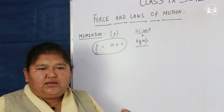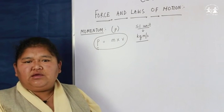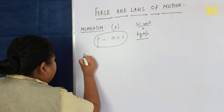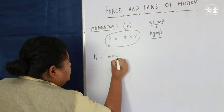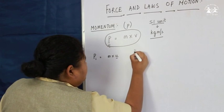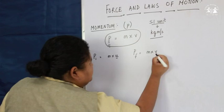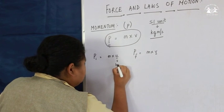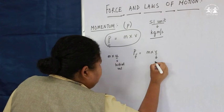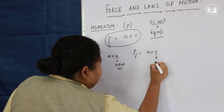When a force is applied, the velocity changes. When velocity changes, we will have an initial velocity and a final velocity. With initial velocity U, we will have initial momentum — that is M into U. And with final velocity V, we will have final momentum — that is M into V, where V stands for final velocity. U is called initial velocity and V is called final velocity, and M is the mass.